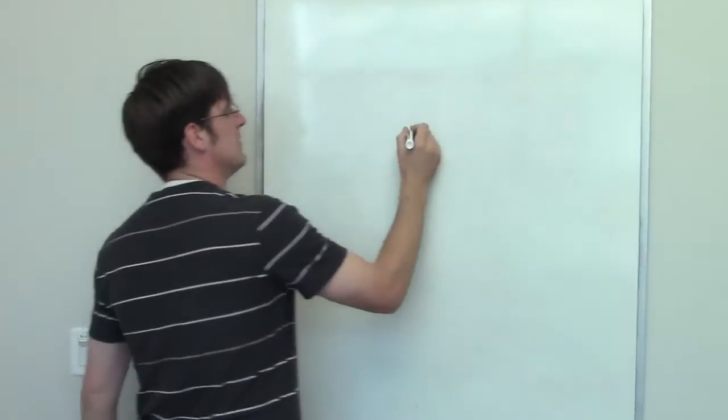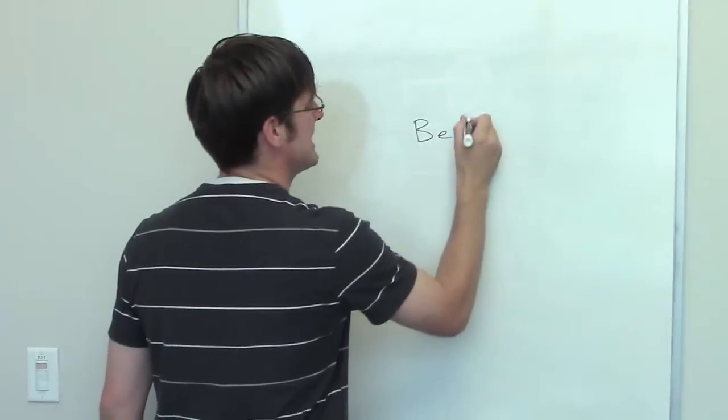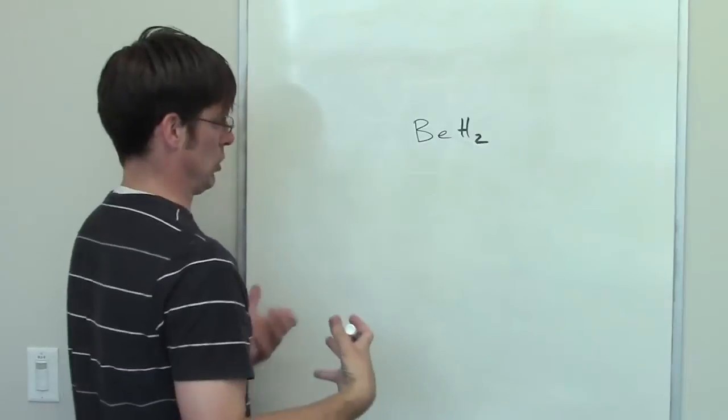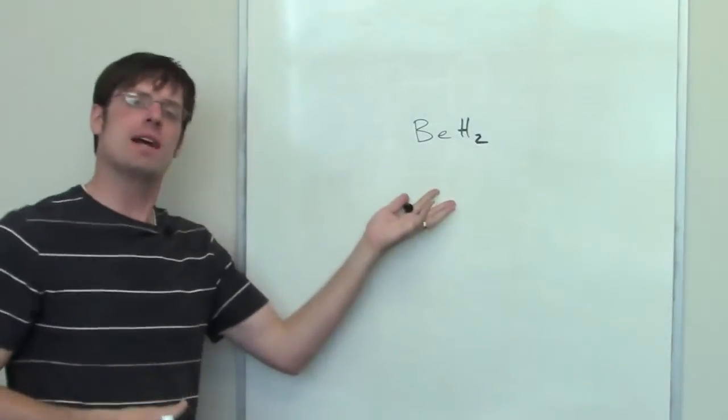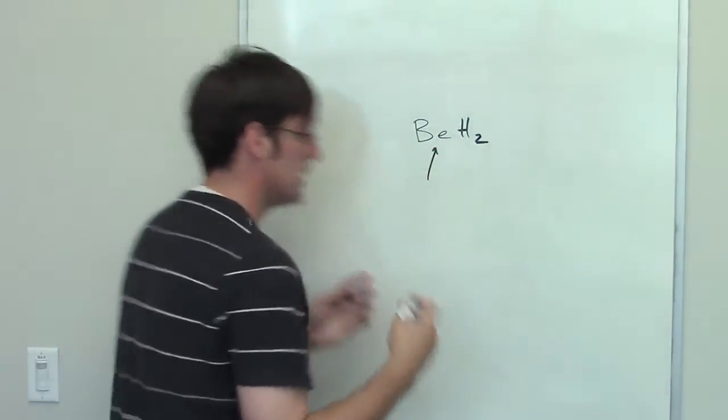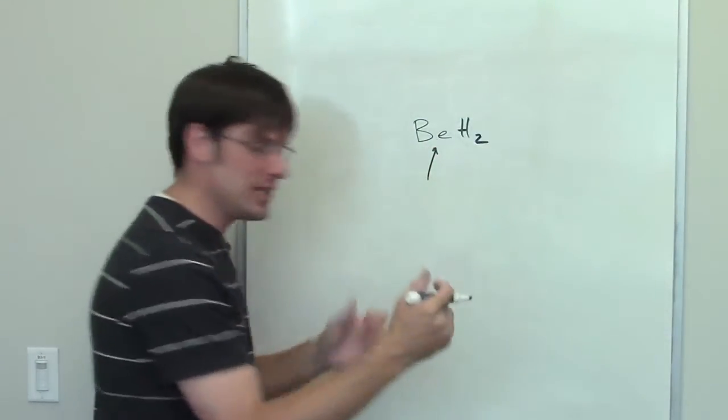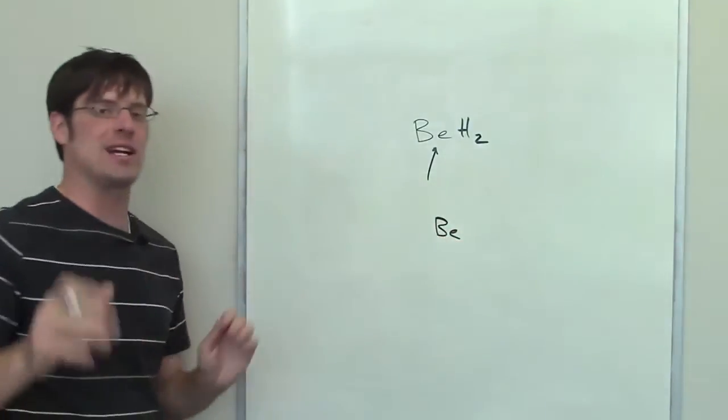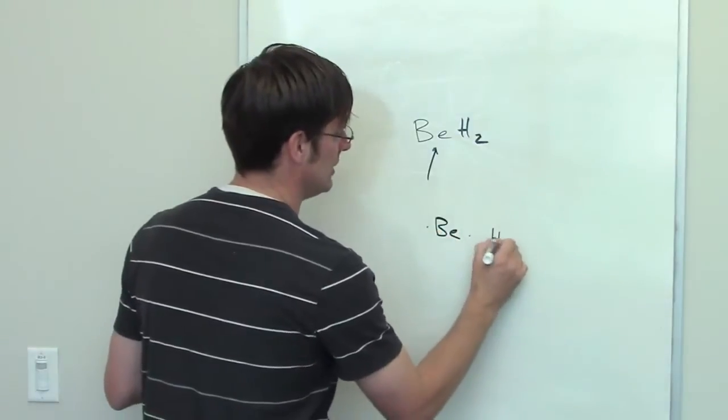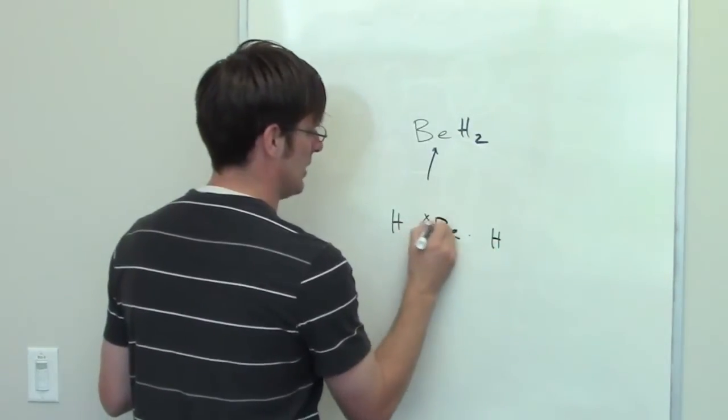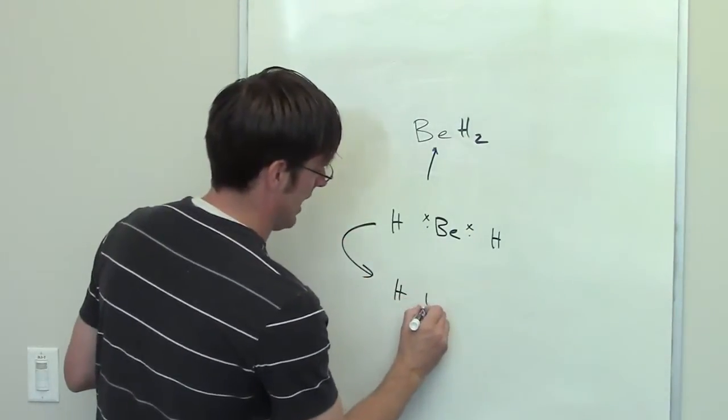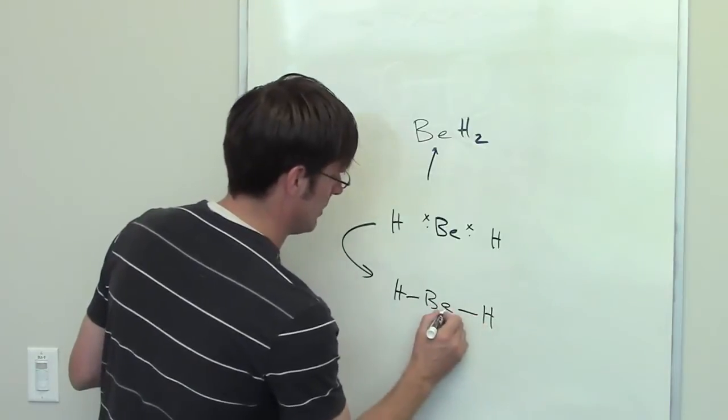For our last problem, we're given this molecule beryllium dihydride, or beryllium hydride. What is the hybridization of beryllium in this molecule? In order to figure that out, we have to actually draw a Lewis structure of it. You'll notice that beryllium on the periodic table is in column two, which means it has two valence electrons. And each hydrogen has one valence electron. They plug those things in there. I convert that into a Lewis structure. And I've got this nice, beautiful, linear molecule here.